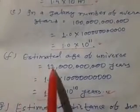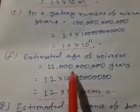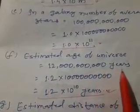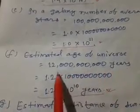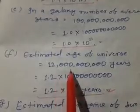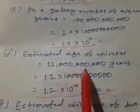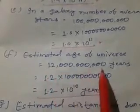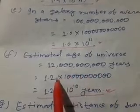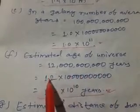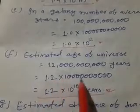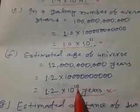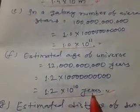Question number F is estimated age of universe is equal to 12,000,000,000 years and we need to write this number in a standard form. As we know, at first we separate zeros so we write 12 into 1 and 9 zeros, but we need to write only one non-decimal digit for this. So we write 1.2 into 1 and 10 zeros, or simply we write 1.2 into 10 to the power 10 years. That is estimated age of universe.